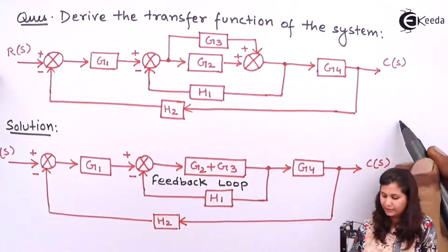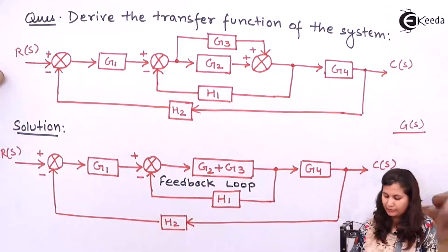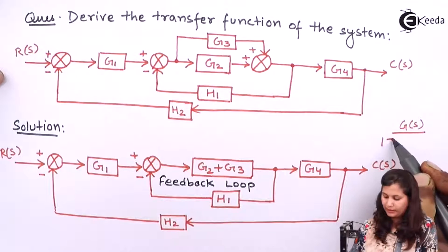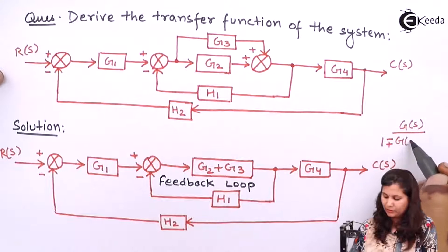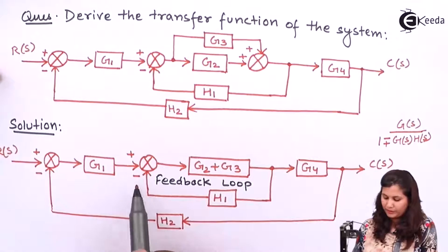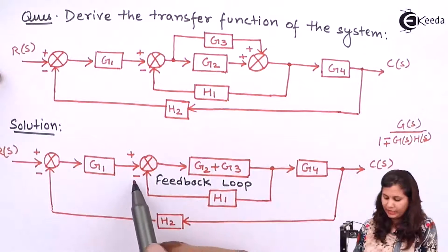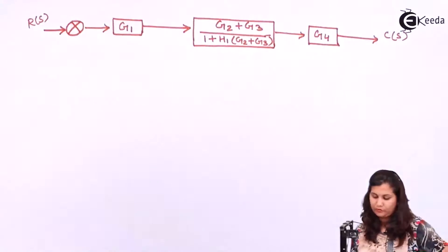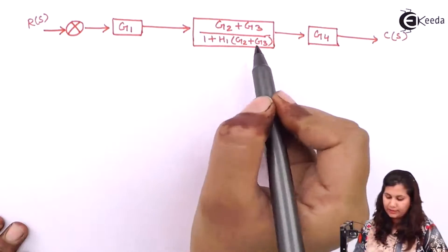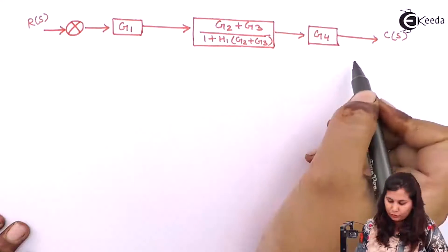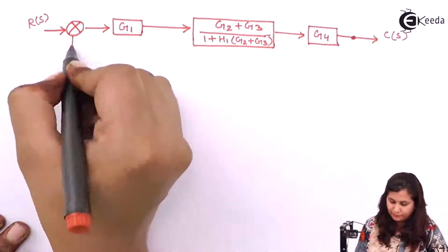The feedback rule says it is G(s) upon 1 minus-plus G(s)H(s). Whenever we have a positive sign at the summing point, we take negative here, and whenever we have a negative sign, we take positive here. So we are taking positive in this transfer function for the negative feedback loop sum point.